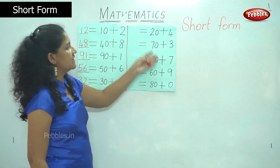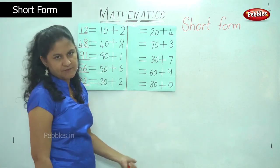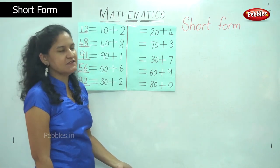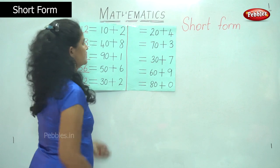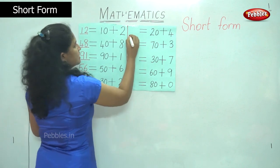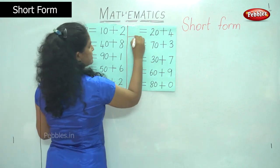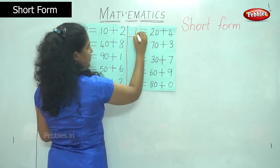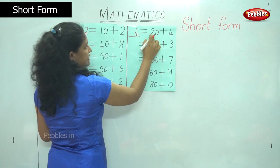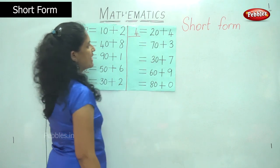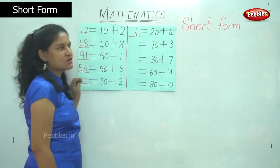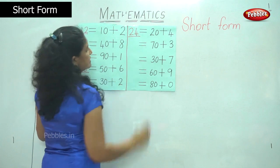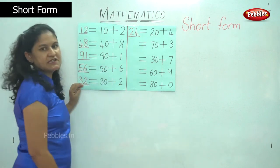Moving on to the next 5 numbers — I hope the short form is easy for you. So I have 20 plus 4. In the ones place I have number 4, and in the tens place I have 2 tens or 20, that gives me the number 2. So my answer is 24.